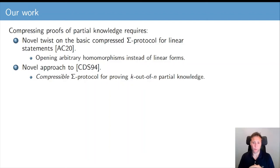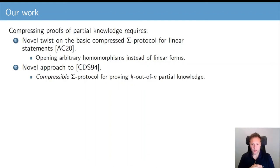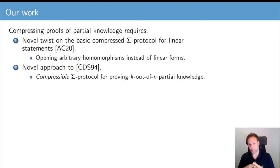Specifically, we have to show that we can open arbitrary homomorphisms instead of only linear forms. The Crypto 2020 paper was restricted to opening linear forms on committed vectors, and now we want to open arbitrary homomorphisms — this is a first generalization required for our techniques. Second, we also have to adapt the CDS-94 approach, because the sigma protocol in the original 1994 paper is not compressible — it is not amenable to the compression mechanism of compressed sigma protocol theory. So we adapt the sigma protocol to make sure that we can apply compression.